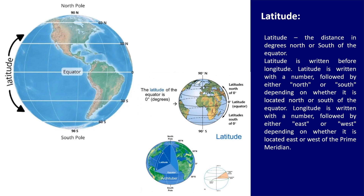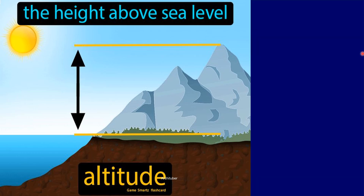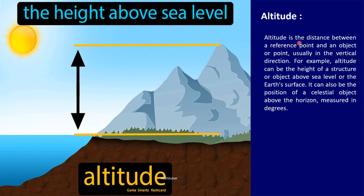Longitude is written with a number followed by either east or west depending on whether it is located east or west of the prime meridian. Now discussing about altitude — altitude is measured from sea level to any object and gives the height of that object. It is the distance between a reference point and an object usually in the vertical direction. Altitude can be the height of a structure above sea level, or the position of celestial objects above the horizon measured in degrees.